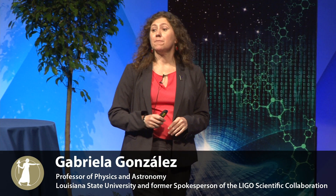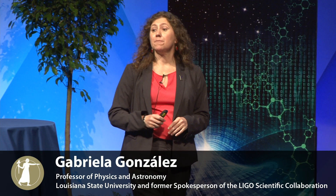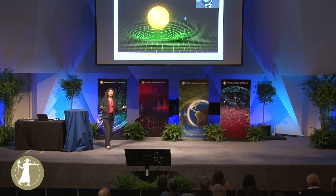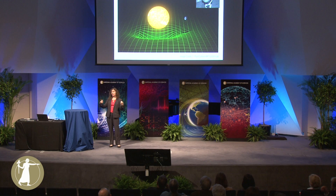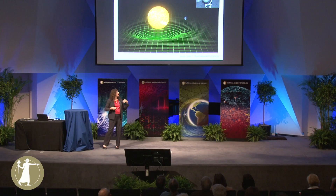In 1915, Einstein published his theory of general relativity, which is actually a theory of gravity. It replaces Newton's theory of gravity because it says that masses do not attract each other because of this instantaneous force, but they actually live in a space-time. Space-time sounds very mysterious, but you have to imagine it as a three-dimensional grid with clocks in all the corners to measure time.